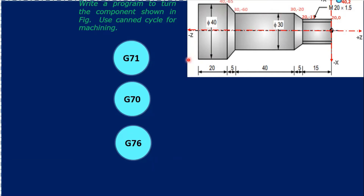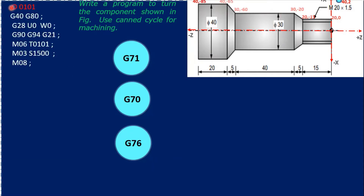After finding all coordinates, we write the program number as O0000. Then G40 G80 — G40 is cutter radius compensation cancel, and G80 is canned cycle cancel, so any previously running canned cycle gets cancelled. Then G28 W0 is the reference position of the tool. G90 means absolute positioning system, G94 is feed rate in mm per minute, G21 means metric system, M06 is tool change with tool number T0101 where 01 is the offset value. M03 starts the spindle clockwise at S1500 RPM, and M08 starts the coolant.